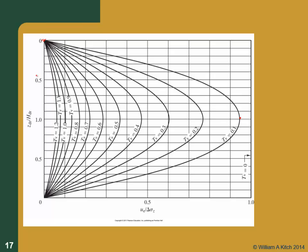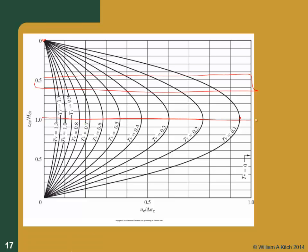We want a location in the layer where we get a lot of pore pressure change with time but not too much. If we pick it at the top it's going to be a long time before we get any pore pressure change. We want a place where it's changing rapidly enough to get a better estimate. For single drainage, the same logic applies — don't put it at the bottom because you won't measure much change for a long time. Somewhere in the middle third is right.